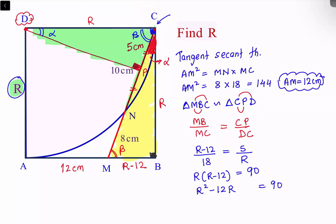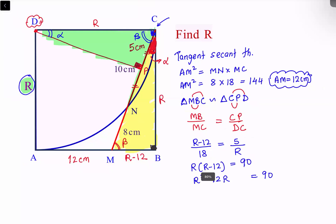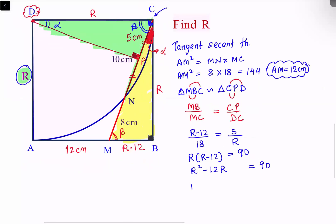Now this 12R we can write as R square minus 2 times 6 times R. We have a square minus 2AB, so I'm adding 6 square here and on the other side also I'll add 6 square. Basically both sides we have just added 6 square.